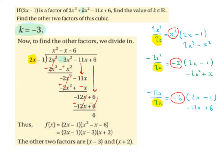Then we bring down the 6 and repeat the process. Taking the highest power of x, which is minus 12x, divided by 2x gives minus 6. We write minus 6 on top and multiply by 2x minus 1: minus 6 by 2x is minus 12x, and minus 6 by minus 1 is plus 6. We write minus 12x plus 6 under the bus stop, change the signs, these cancel, and we're left with 0.